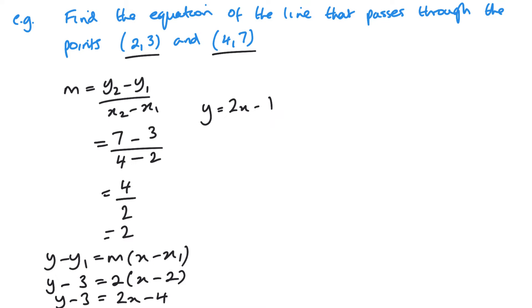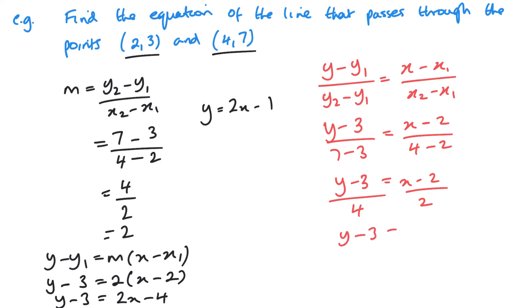Now I said there's another method, although this isn't a method that I generally prefer to use. We've got y minus y1 over y2 minus y1 equals x minus x1 over x2 minus x1, where 1 and 2 are my two coordinates. So y minus, and I'll use the same coordinates in terms of 1 and 2. So my (2,3) is my 1, 7 minus 3, x minus 2 over 4 minus 2. This gives me y minus 3 over 4, x minus 2 over 2. Multiply by 4.